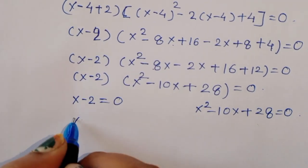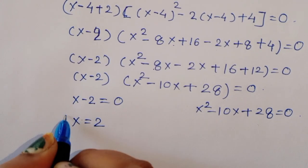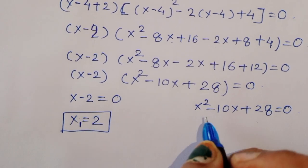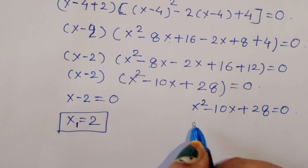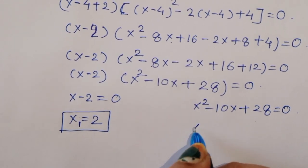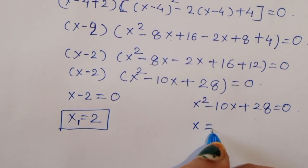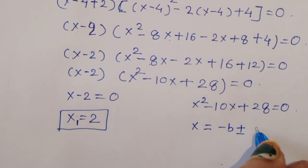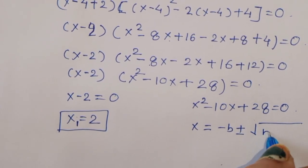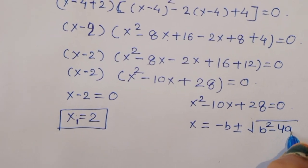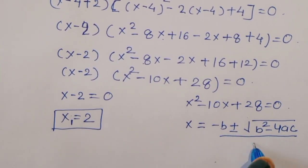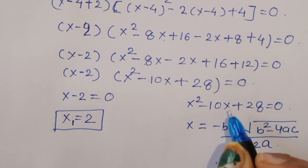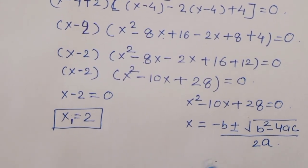Now, from (x - 2) = 0, x equals 2. This is the value of x₁. For the second term x² - 10x + 28 = 0, we apply the quadratic formula: x = (-b ± √(b² - 4ac)) / 2a.